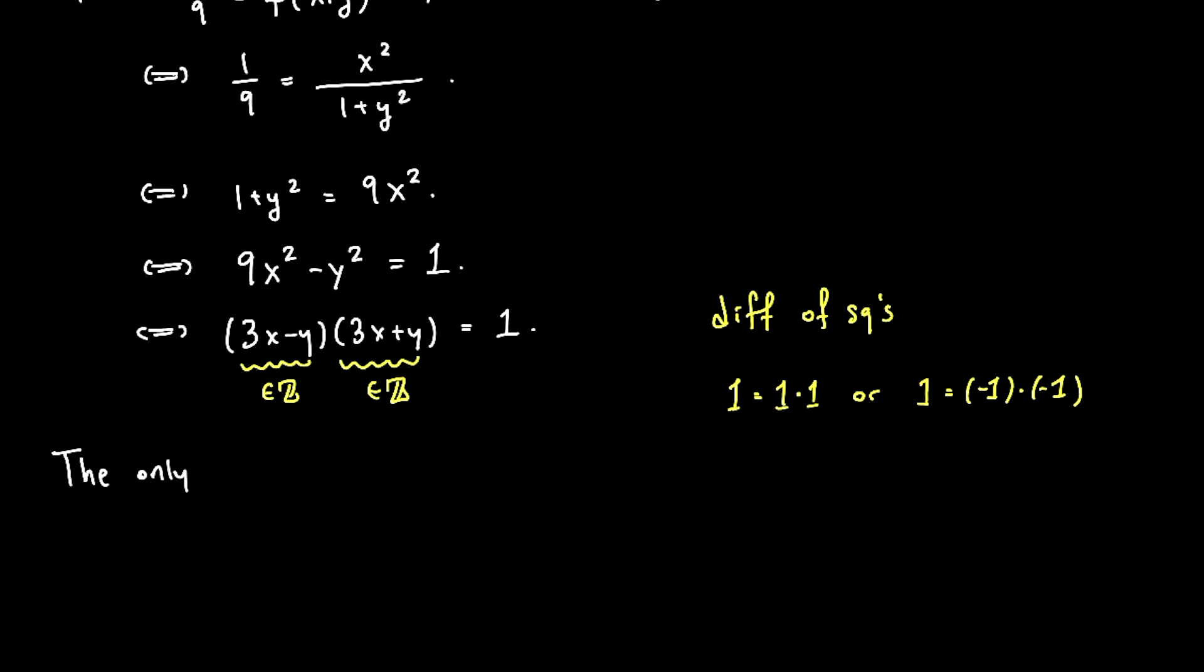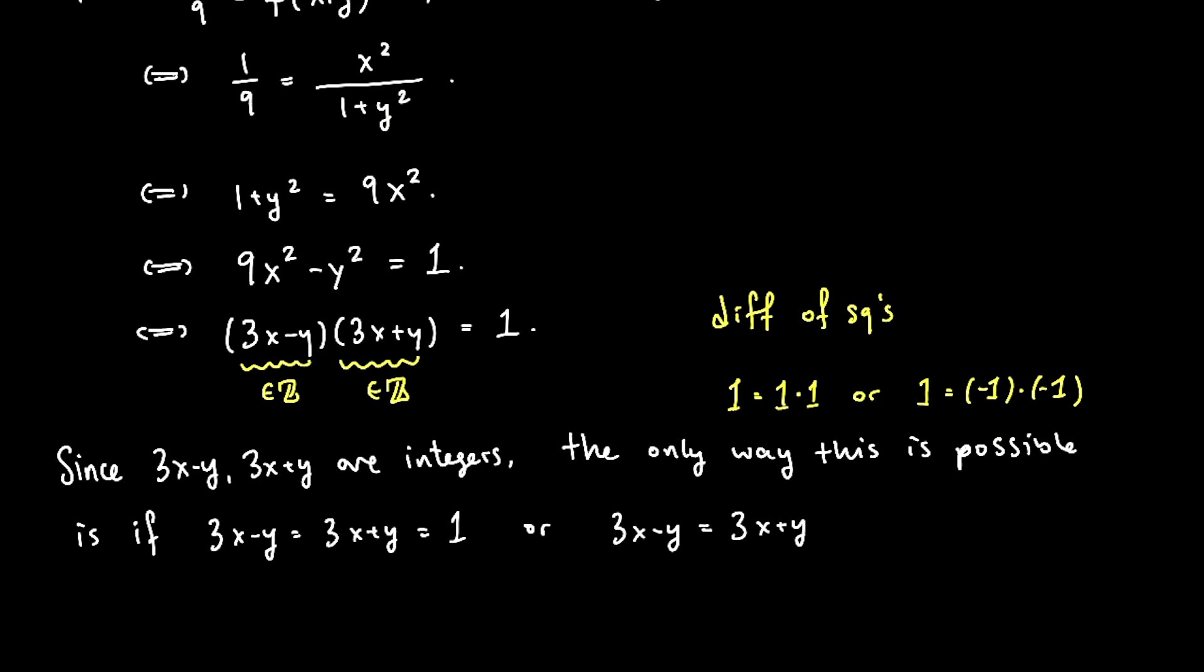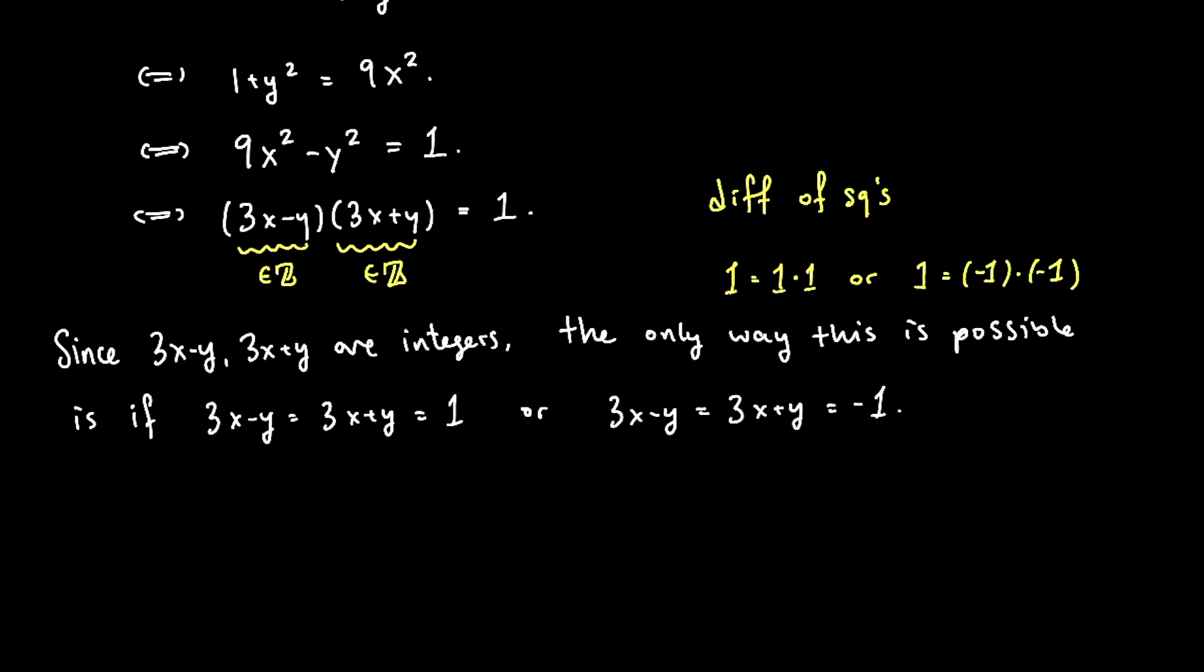So let's write it like this. The only way this is possible, or maybe I should even elaborate, I should say, since 3x minus y and 3x plus y are integers, the only way this is possible is if 3x minus y equals 3x plus y equals 1. So either both factors are 1, or both factors are negative 1. Okay, so two cases. Let's call this case 1 and case 2.